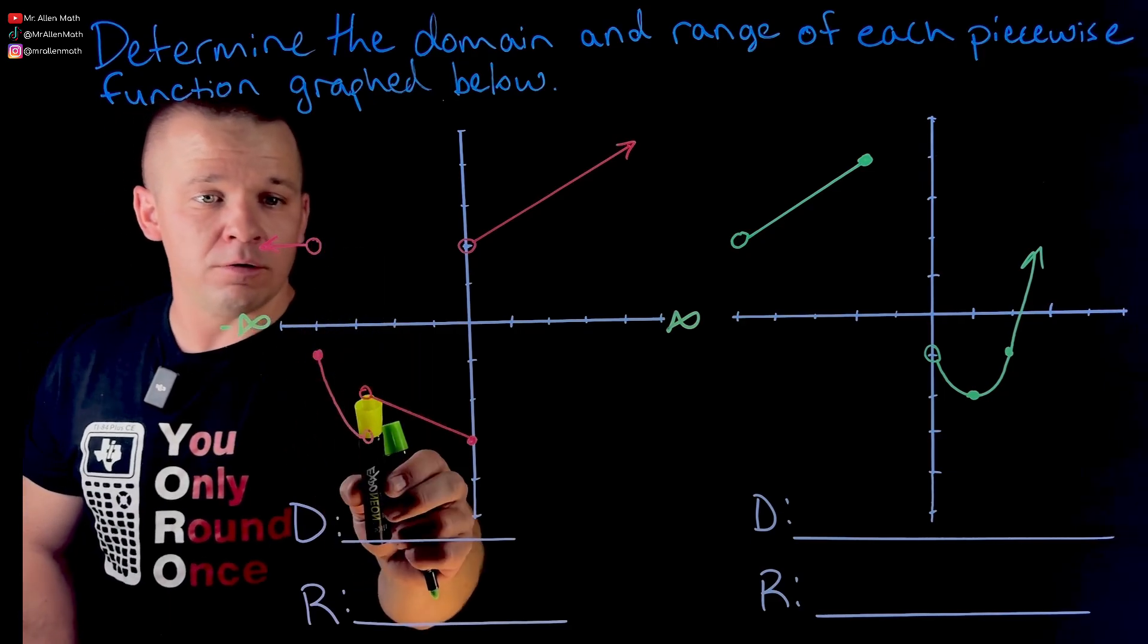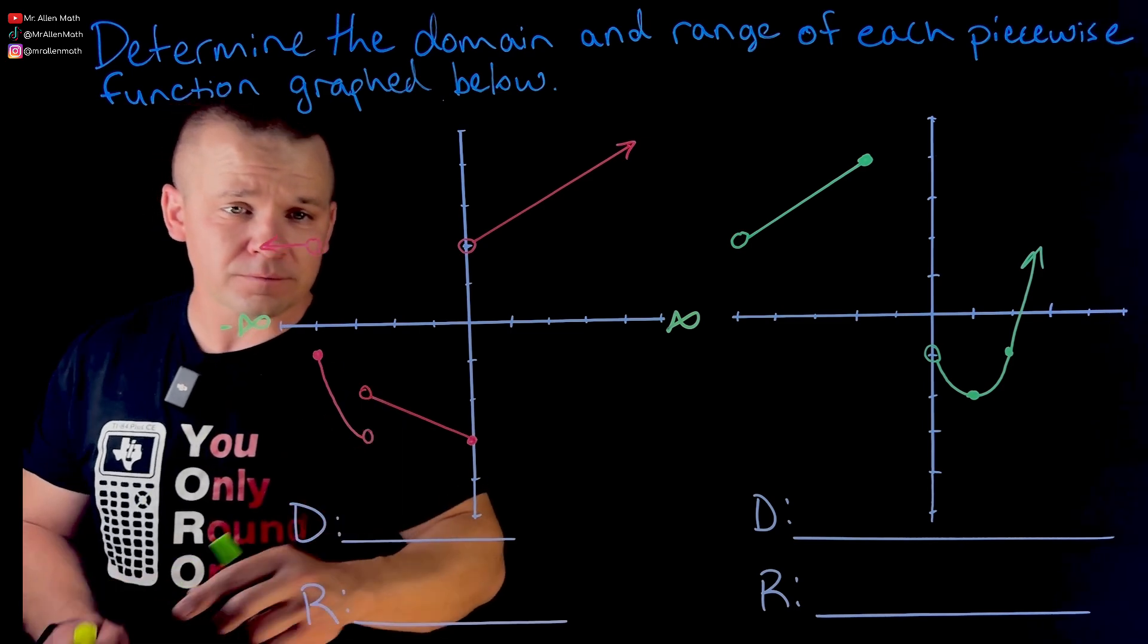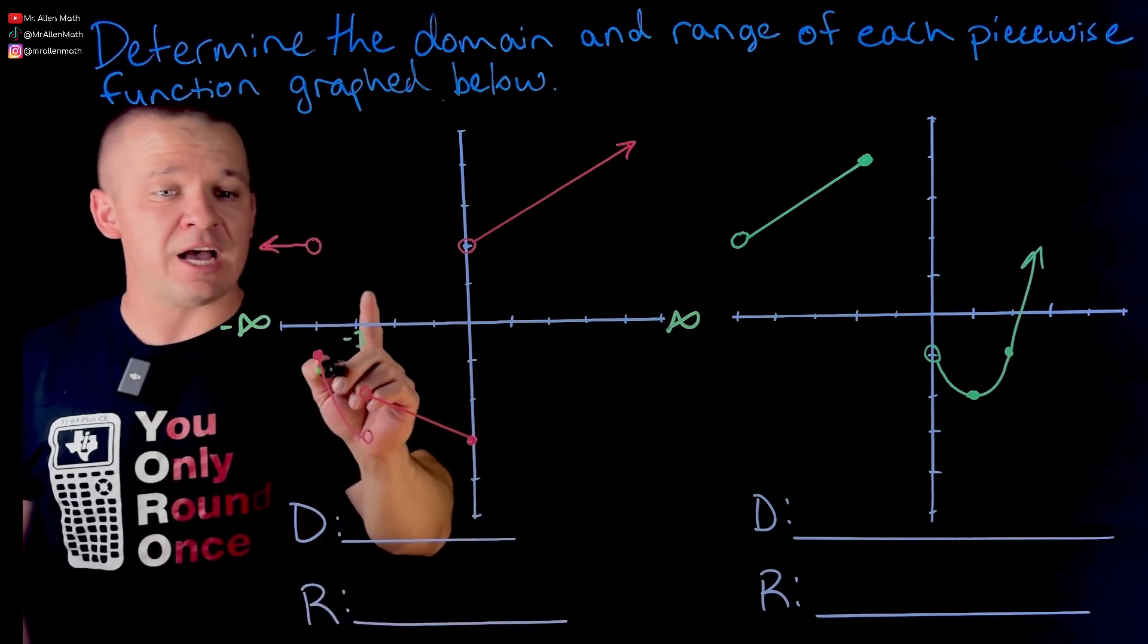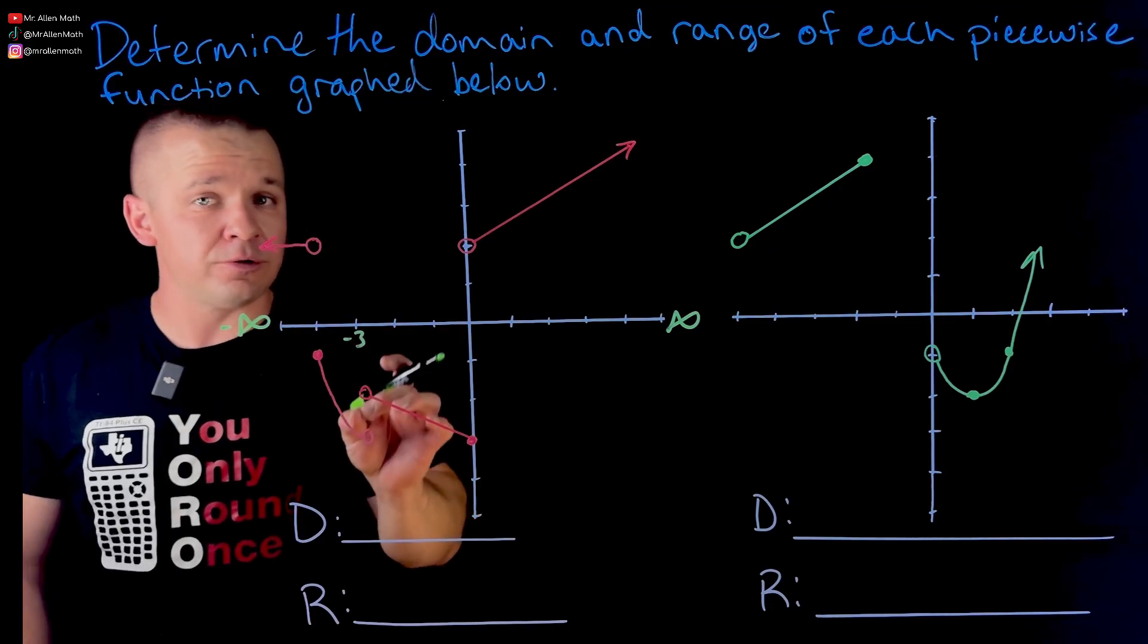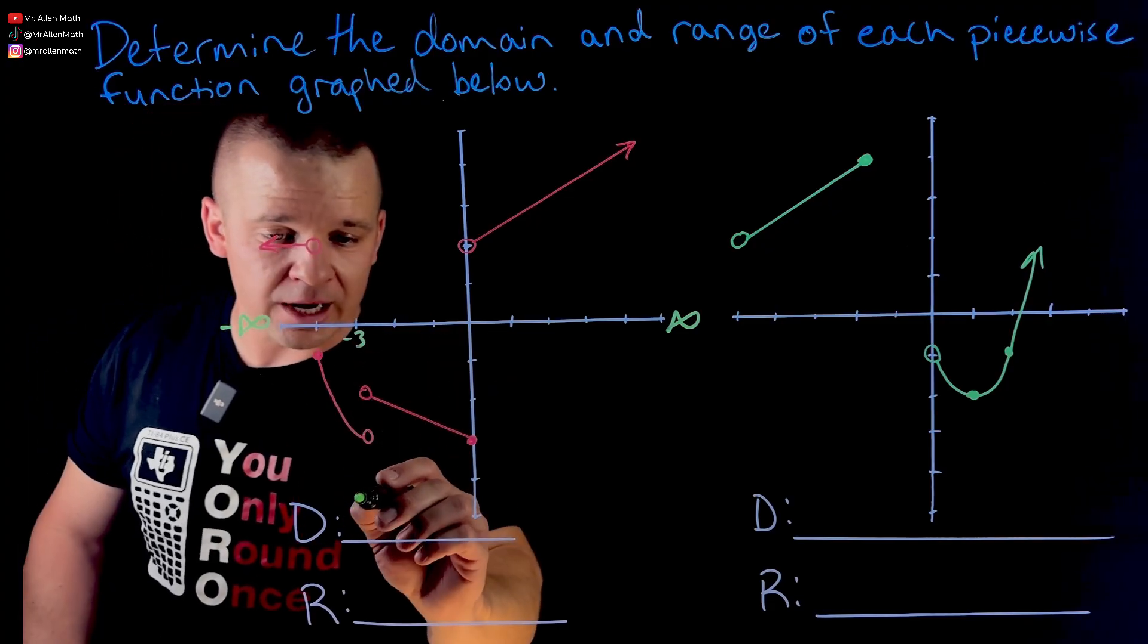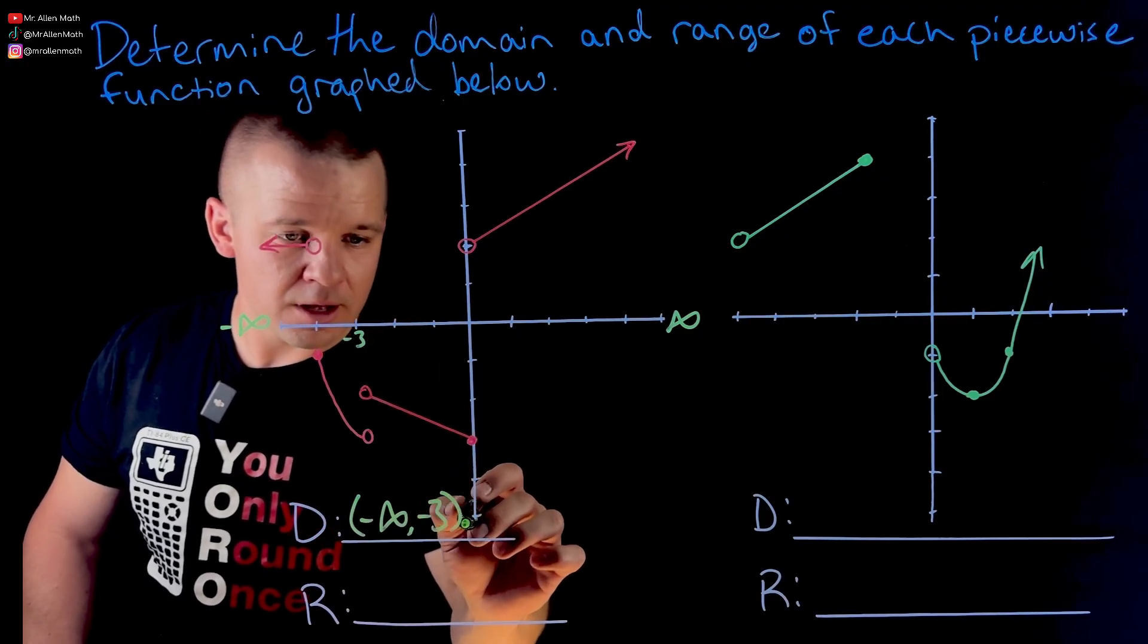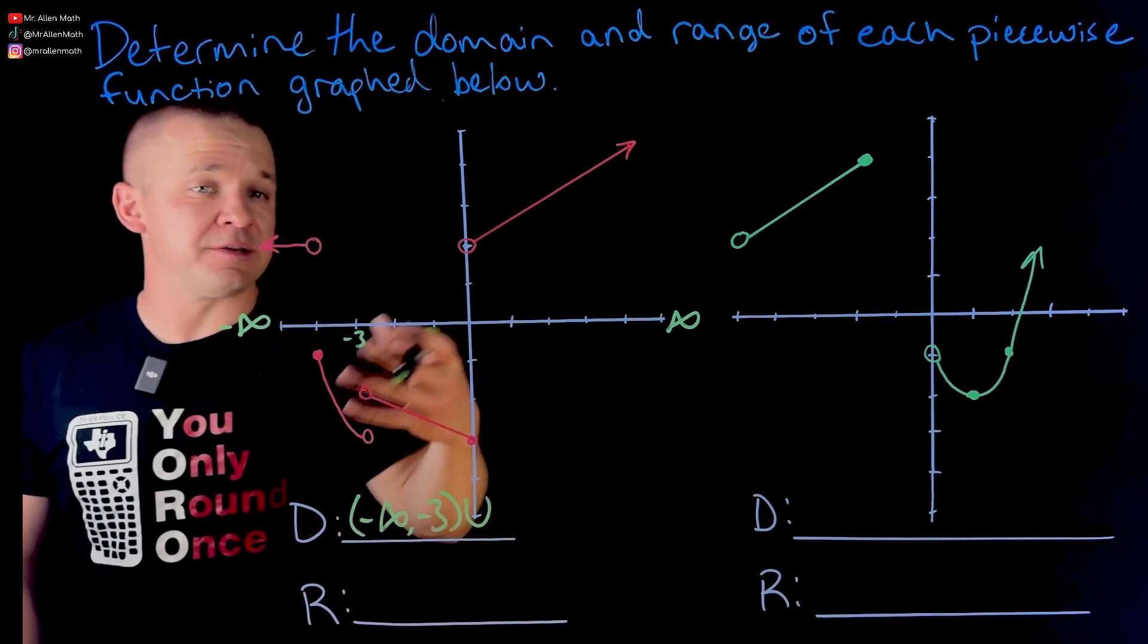Keep going here. Open circle, double open circle. So at negative three, I'm going to have to exclude that value. So if we're going to go in interval notation, I'm going to go from negative infinity to negative three, then we'll union something else in there.